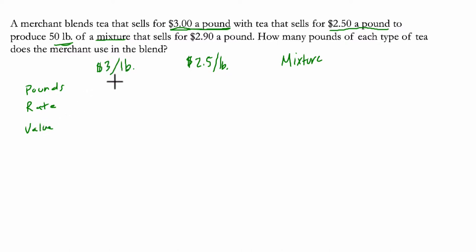So for $3 a pound, let's call that X. We don't know how much they have, but we know it's $3 for every pound. So the value is going to be the pounds times the rate. So 3 times X. It's $3 for every pound we have.